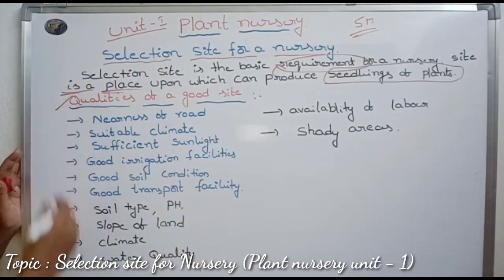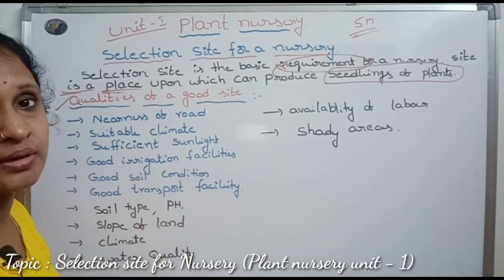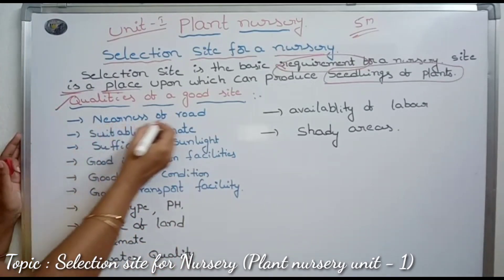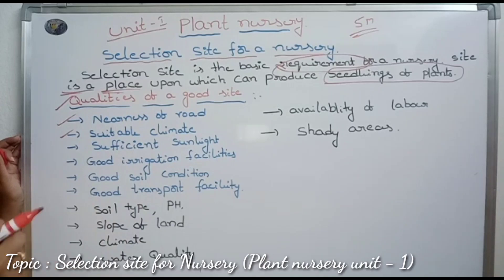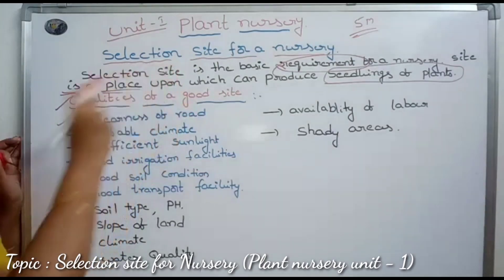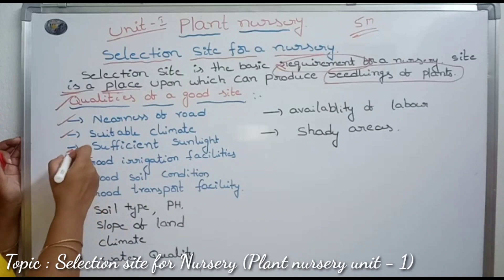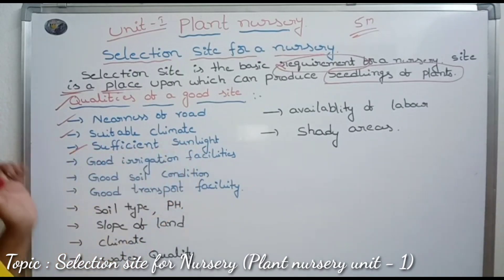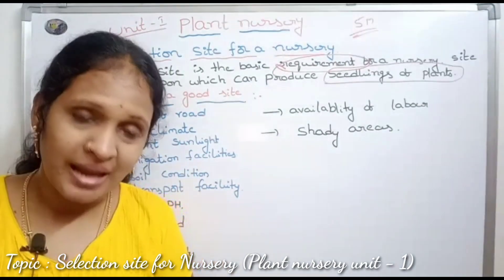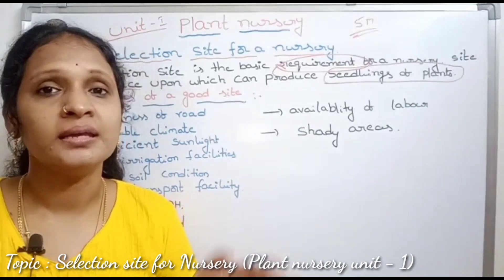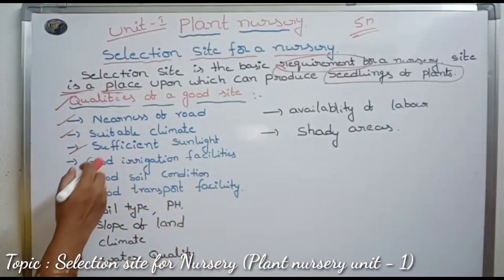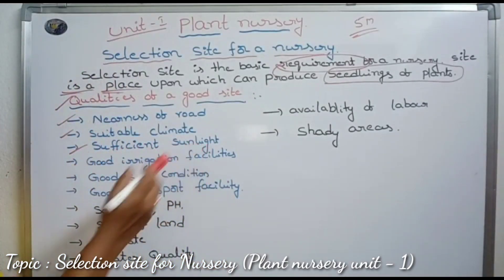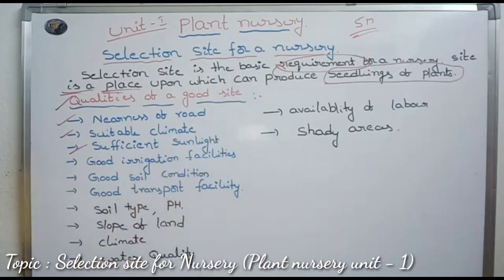Now, the qualities of a good site. First, nearness to a road — road access should be available. Second, a suitable climate, which is one of the best requirements for the maintenance of a nursery. Third, sufficient sunlight — sunlight is very important for plant growth. Some areas may be shady, but sunlight must still be sufficiently available.